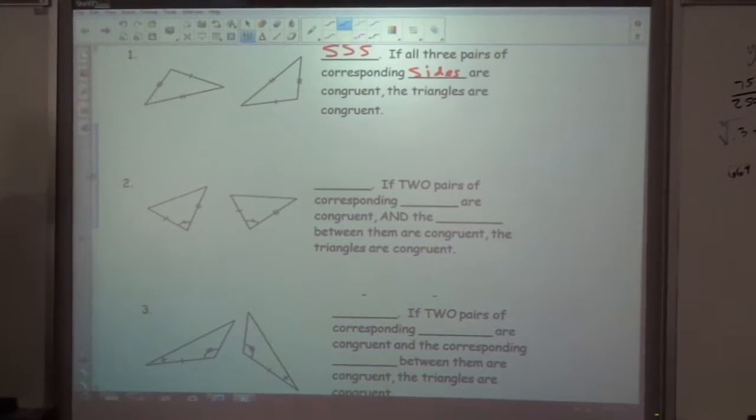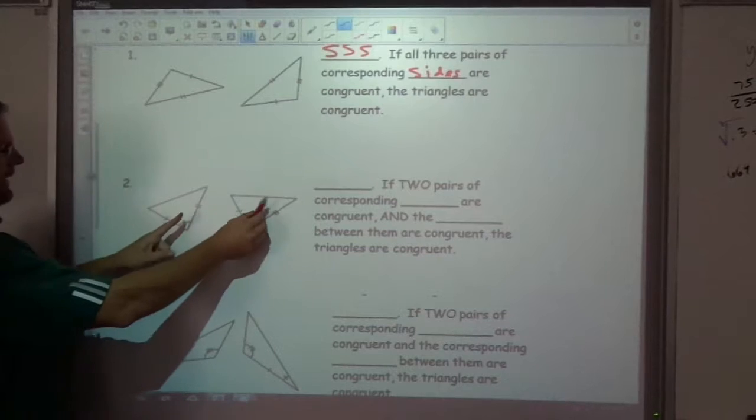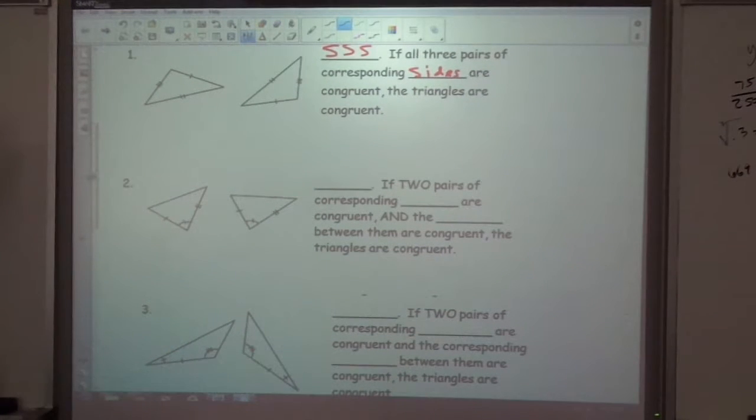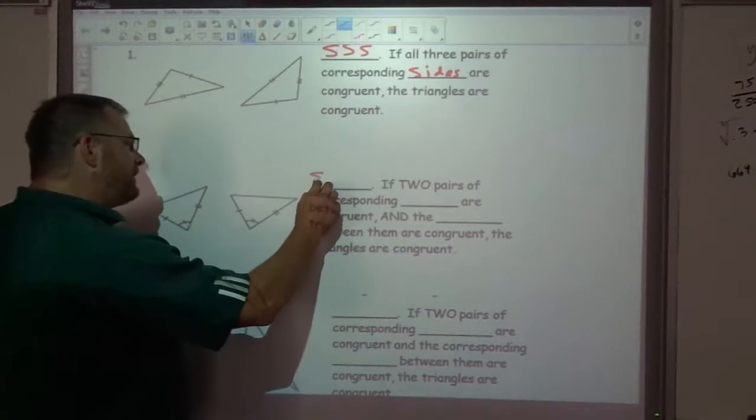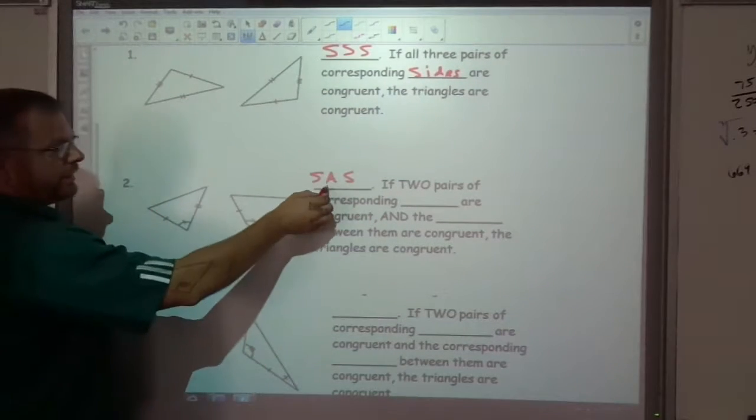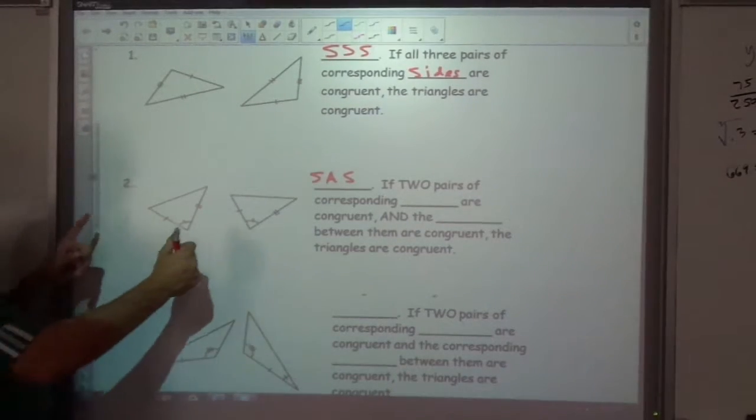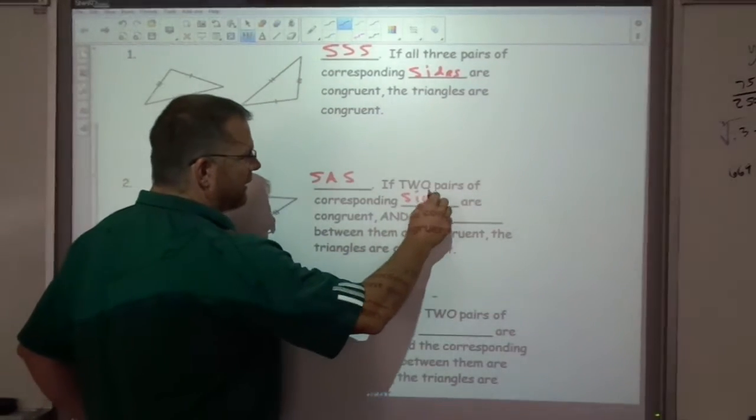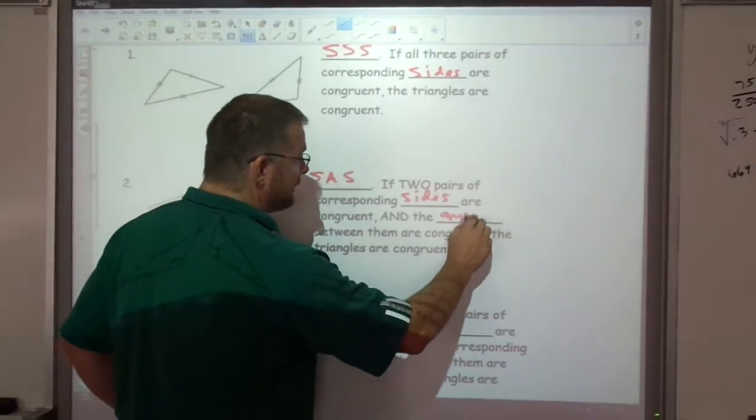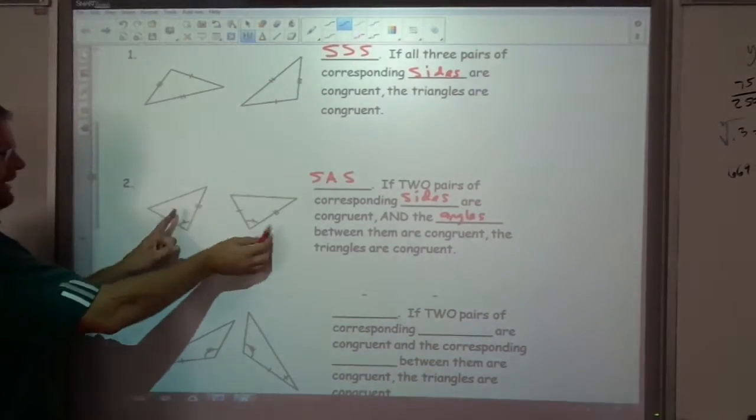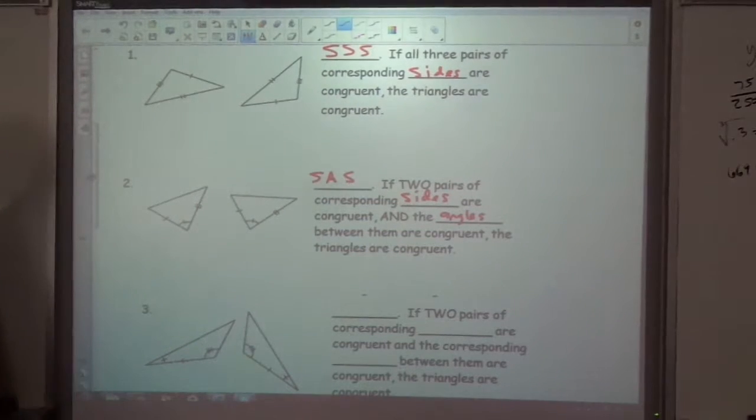The second one is if we have equal sides and an angle that's in between those equal sides. So that's called side, angle, side. Notice that the angle is in between the two sides. And that's when we have two pairs of corresponding sides are congruent and the angles between them are congruent. So these are fine and the one in between is also good.